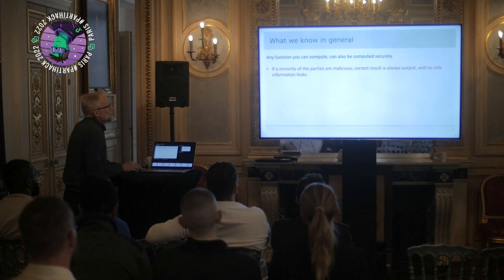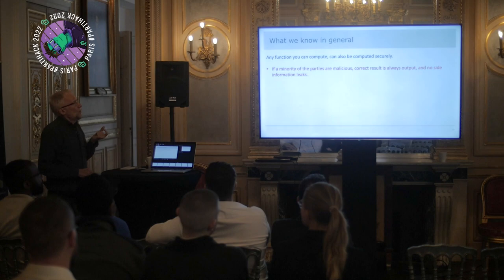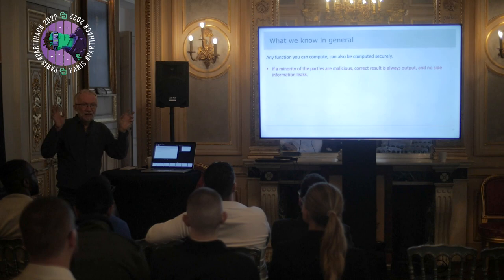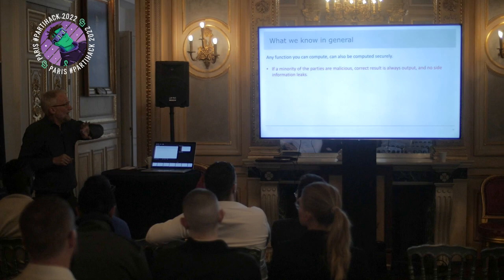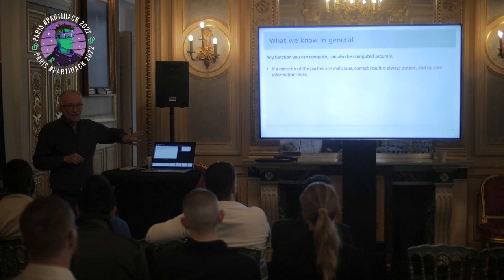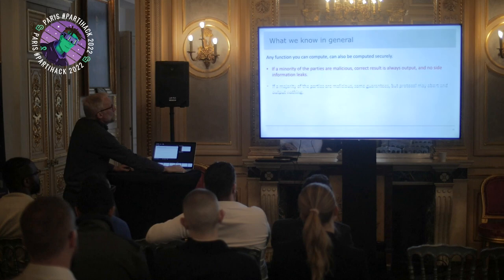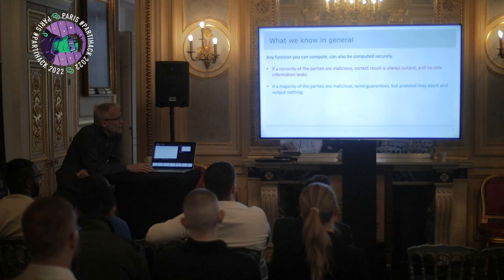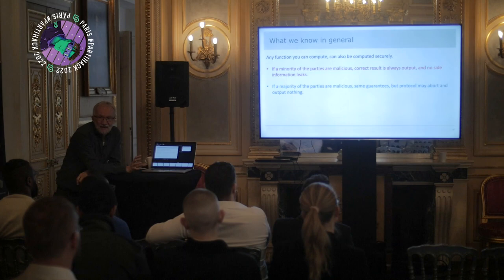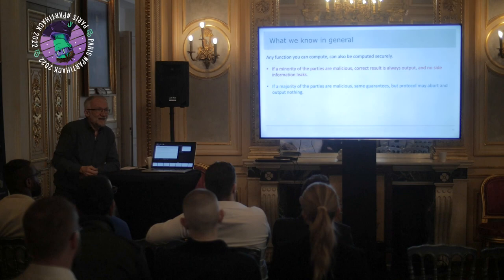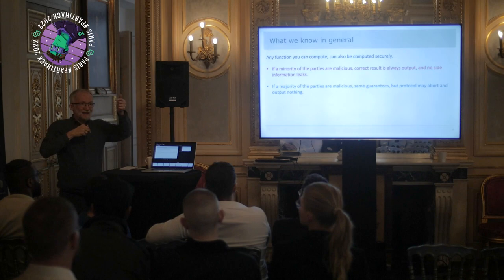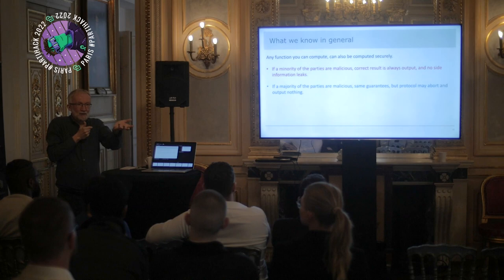In general, what we know is that basically any function you can compute, you can also compute securely — not necessarily always very efficiently, but it can be done in principle. In particular, as long as a minority of the parties are malicious, we can always get the right result out, and there's no side information that leaks. This is a general result. As long as the majority of these people do what they're supposed to do, no minority can force an incorrect result, and they won't learn anything they shouldn't. If you have a majority of malicious parties, you get the same privacy guarantees — the only thing you cannot guarantee is that you get the output. If a majority is working against you, they can stop the system; there's no way around this. If you have two parties and one just stops playing, you can't complete anything — it's kind of the best possible guarantees.